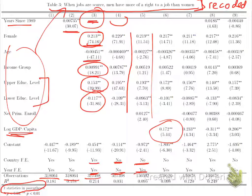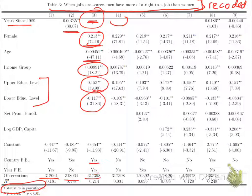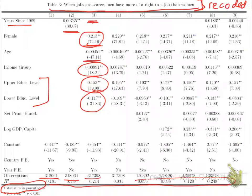There are some other specifications including net primary enrollment, but that's the gist of interpreting these coefficients. The R-squared is about 10 to 20% — roughly 0.10 to 0.18 depending on the specification. So that's a regression we have now interpreted, and we have a better idea of what the coefficients mean.